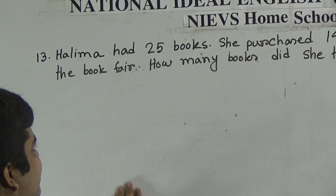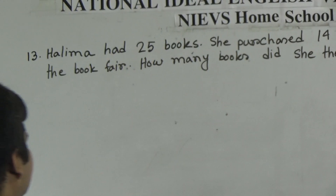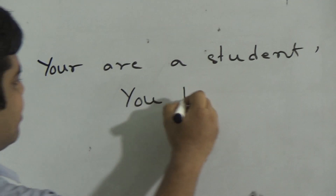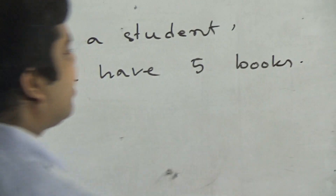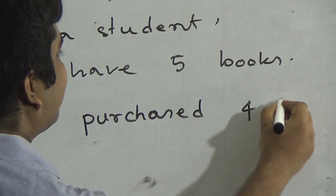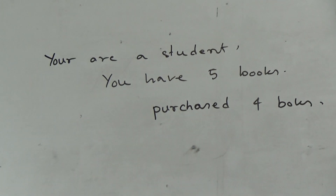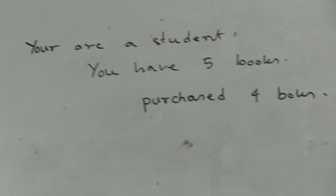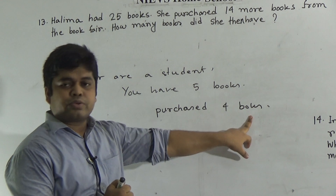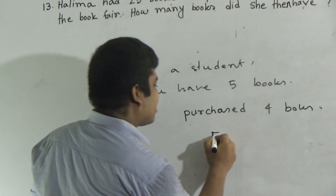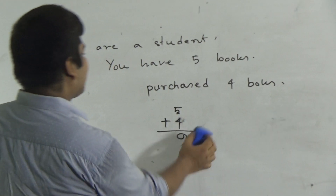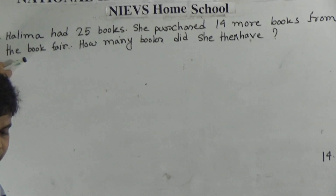Before starting to solve this math, at first I give you a small example. Notice — you are a student. You have five books, and you purchased four books from the book fair. Now, how many books do you have? In previous you had five books, after that you purchased four books. So how many books do we add? Five plus four, and we get nine. By adding, we get the required result. Just similar type of math, we shall solve question number 13.